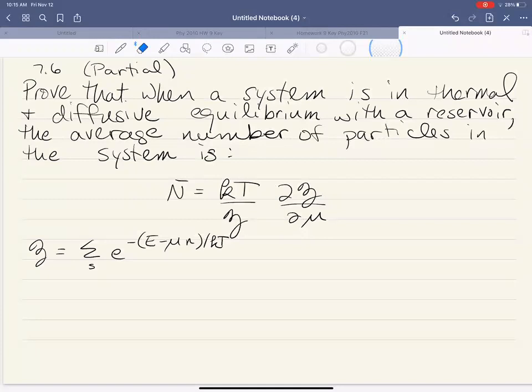Now in a previous lecture, which you should watch if you haven't already seen, the grand partition function is defined as the sum over all the Gibbs factors. And so the Gibbs factors are given by e to the minus (E - μn)/kT.